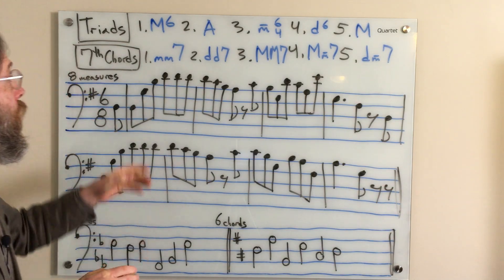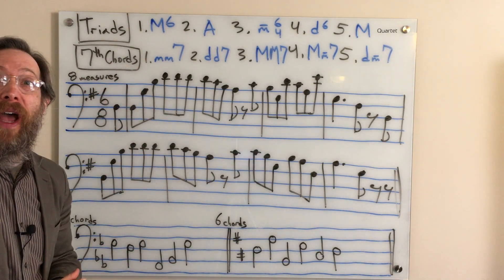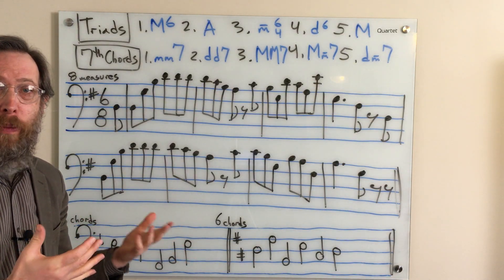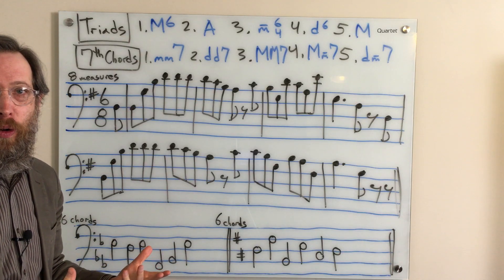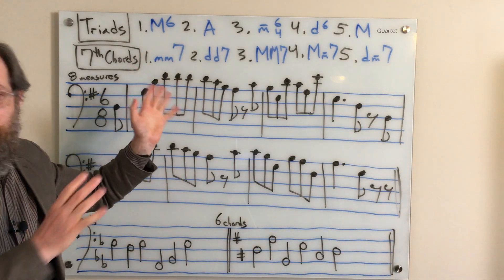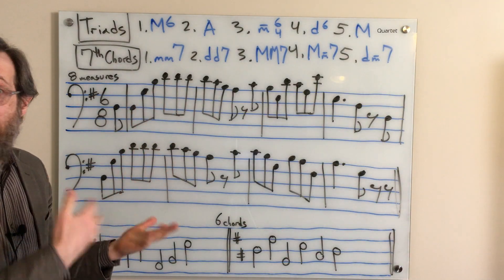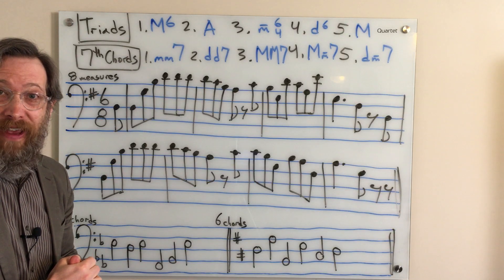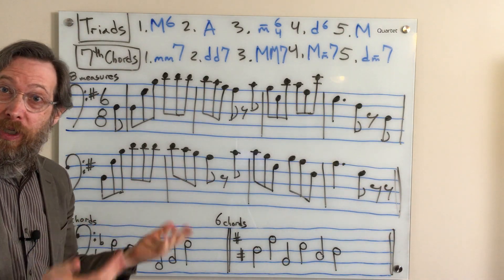For our seventh chords, number one was a minor, minor seven, or you could just say a minor seven. There's a couple different nomenclatures on how you describe seventh chords. So minor, minor seven is the way I'm using, but you could also just call it a minor seventh chord. Number two is a diminished, diminished seven. You could also call that just a diminished seventh chord.